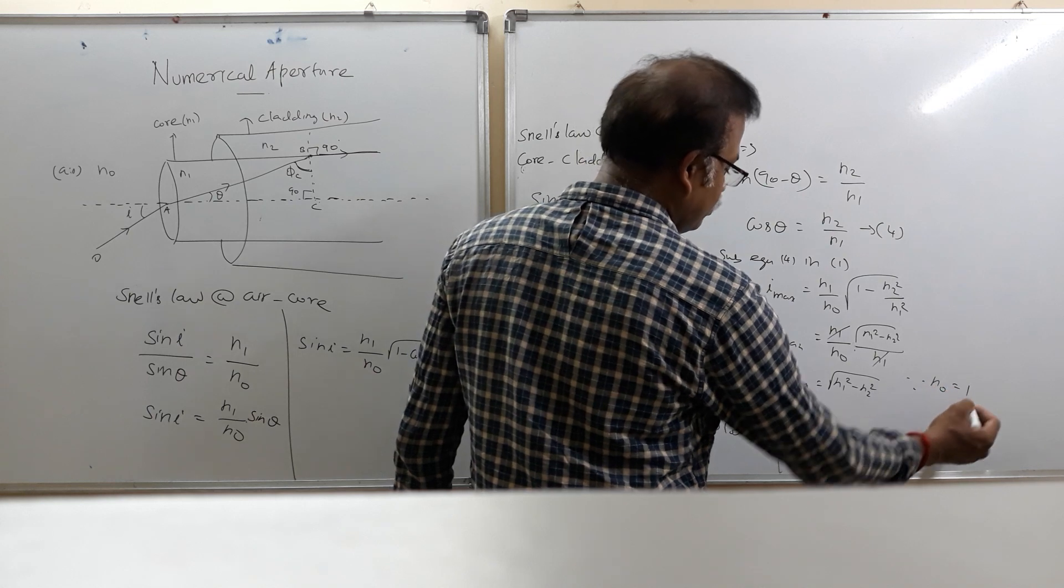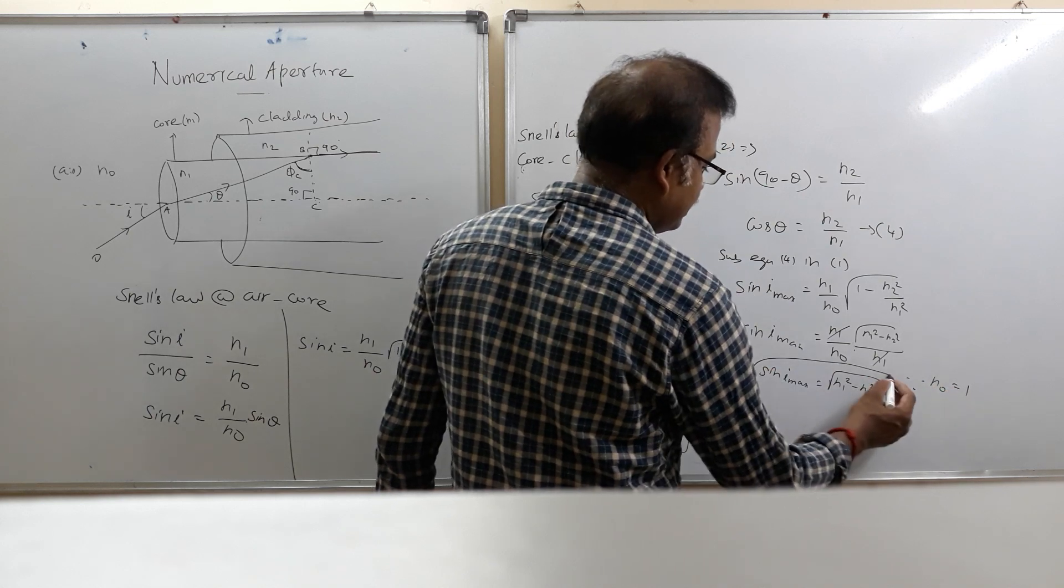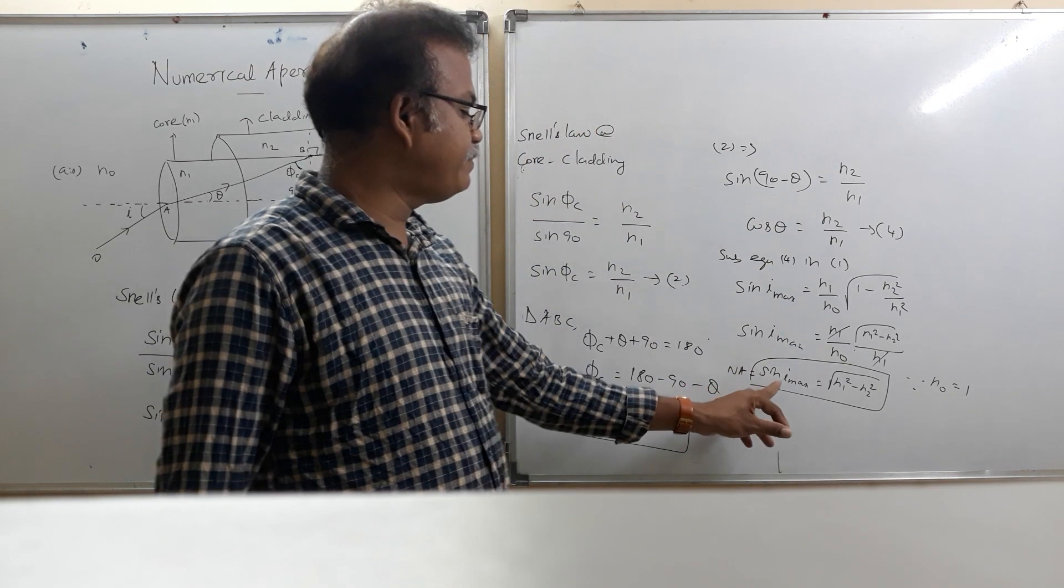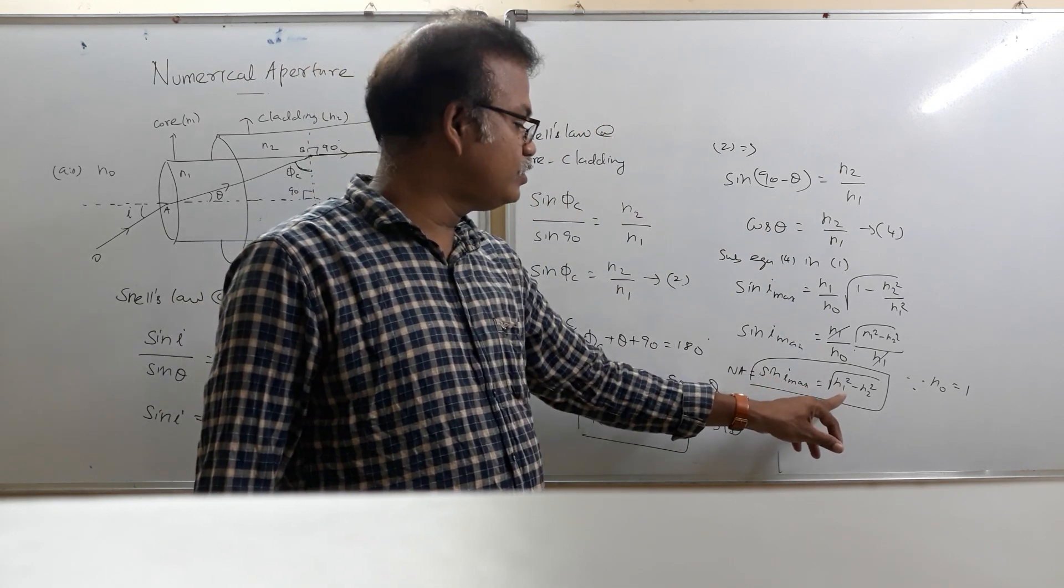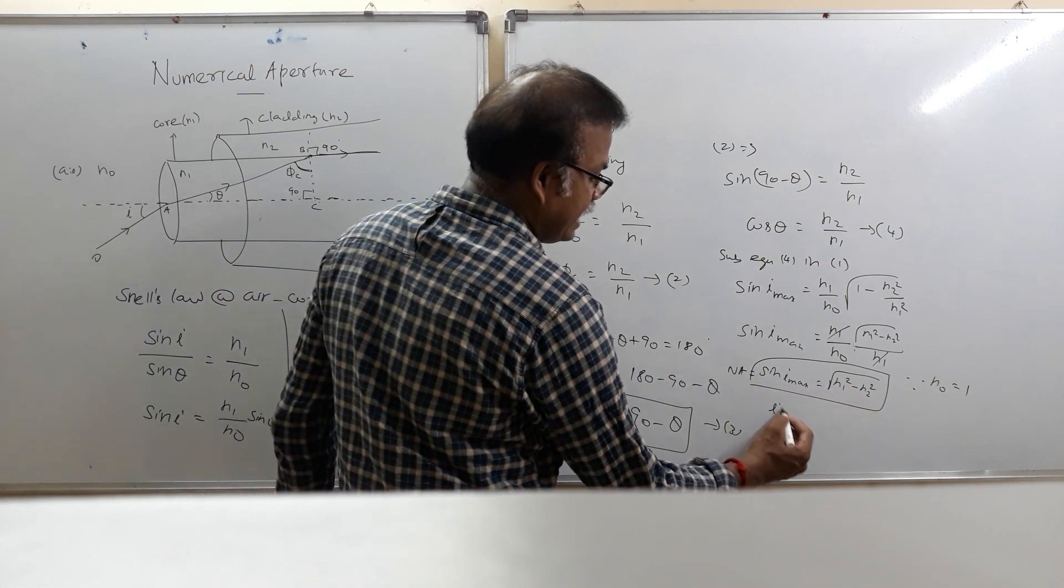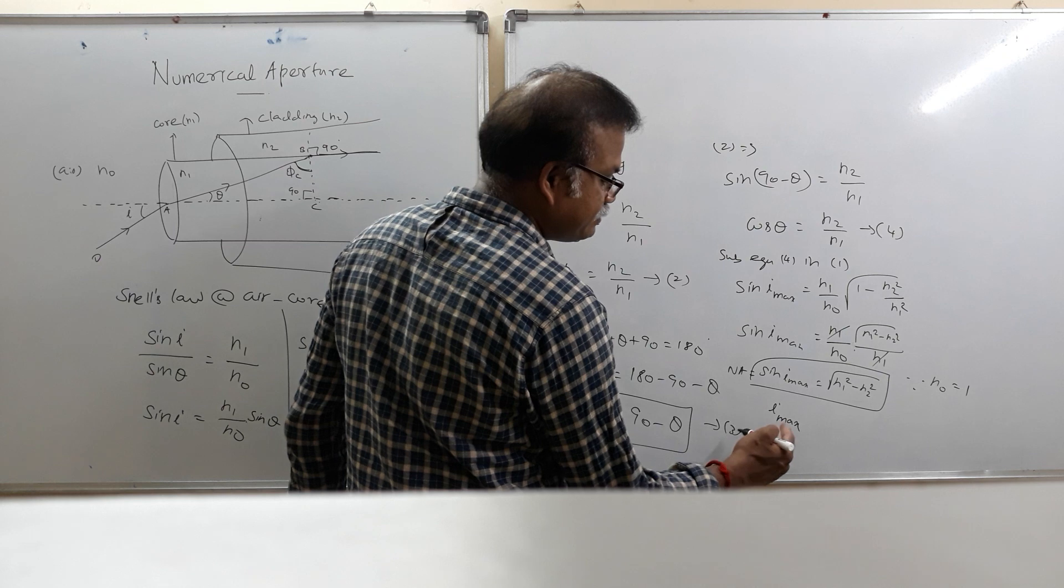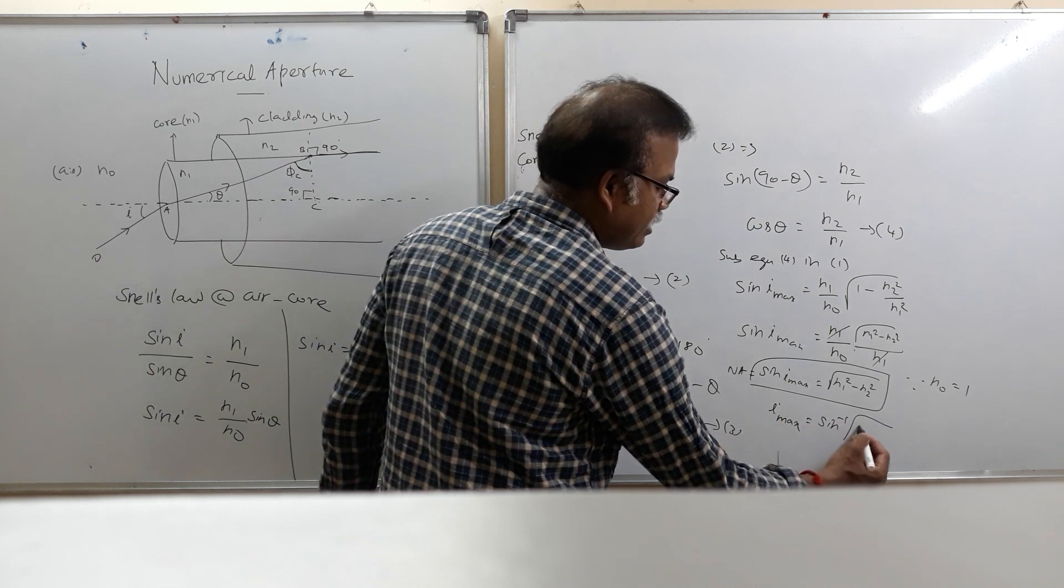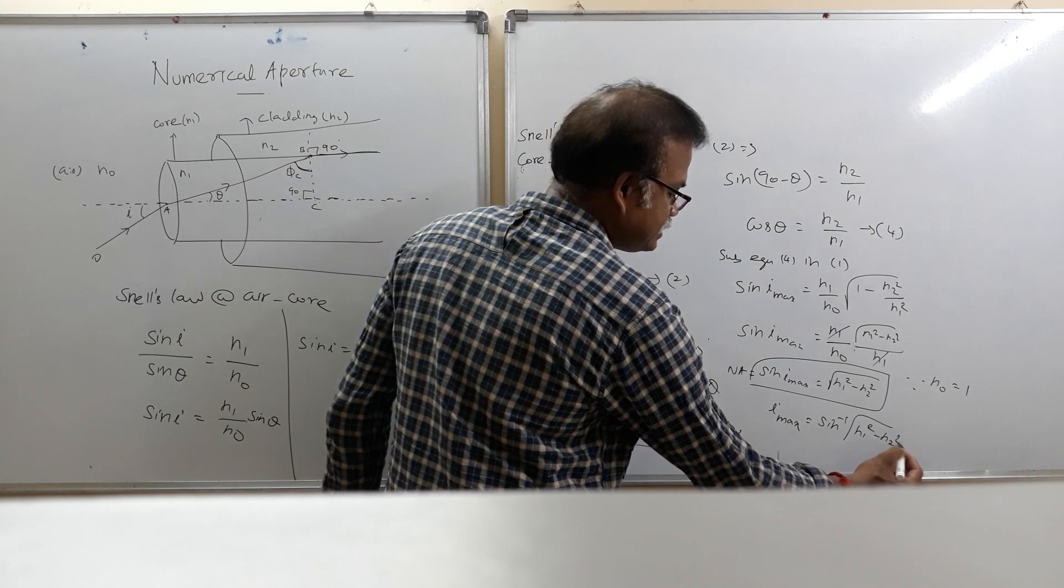Since N0 is equal to 1, this is called as numerical aperture. The numerical aperture is nothing but sine i max, that is equal to root of N1 squared minus N2 squared. Now, the i max is called as acceptance angle, so that is equal to sine inverse of root of N1 squared minus N2 squared.